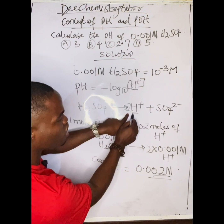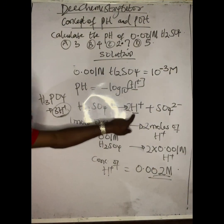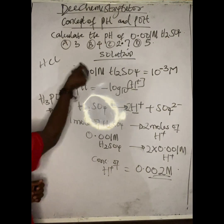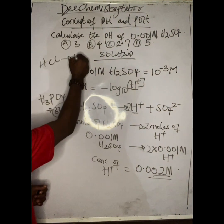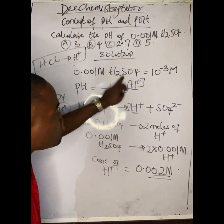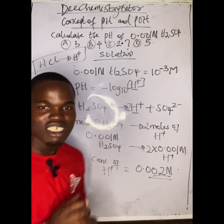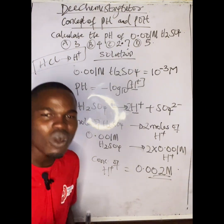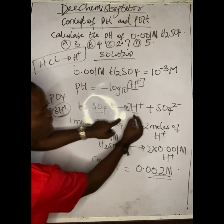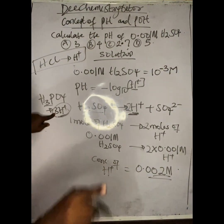This concept is called the basicity of an acid — defined as the maximum number of replaceable hydronium ions present in one mole of the acid. One mole of H₂SO₄ gives two H⁺, so its basicity is 2. For H₃PO₄, it releases three H⁺, so its basicity is 3. For a monobasic acid like HCl, 0.001 mol/L gives 0.001 mol/L H⁺, so the basicity is 1.